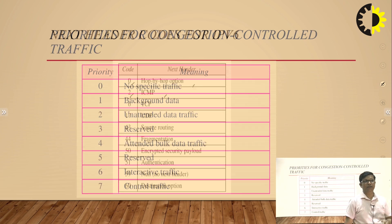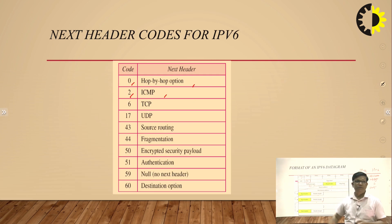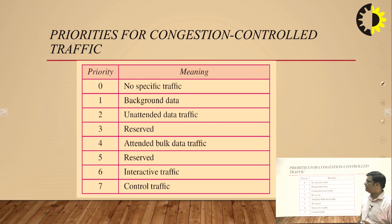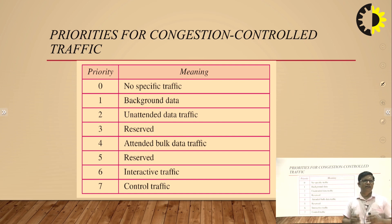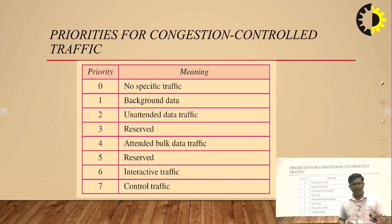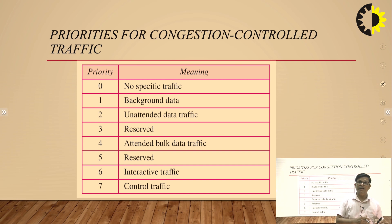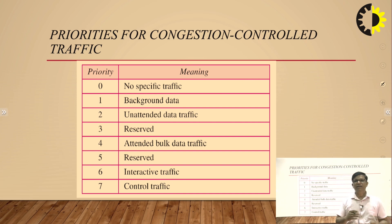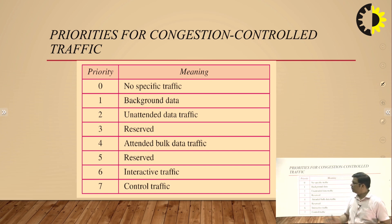This is the priority for congestion control traffic. The priority field is 4 bits long. If priority is 0, there is no specific traffic — the line is free and you can transmit data without any hurdle. If the priority bit is 1, it means there is background data. For example, in music your voice is foreground and the instruments are background. So background data can be separated from foreground.